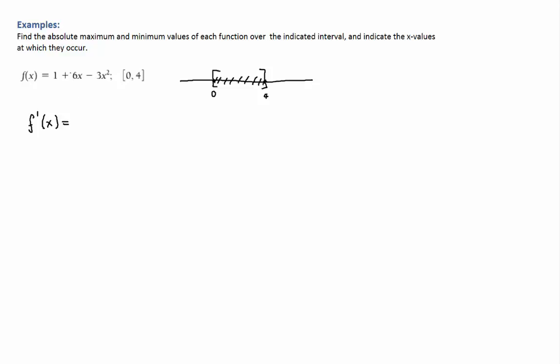And in this case the first derivative would be 6 minus 6x. Derivative of 1 is 0, derivative of 6x is 6, and derivative of negative 3x squared is going to be negative 6x. And when you set that equal to 0, you're going to have this equation that you can solve by adding 6x on both sides and dividing by 6 to obtain x equals 1.